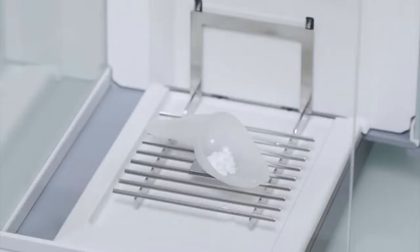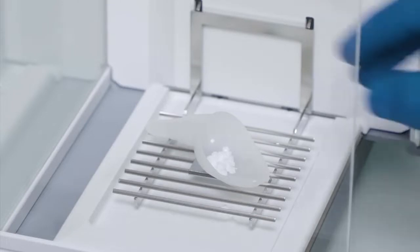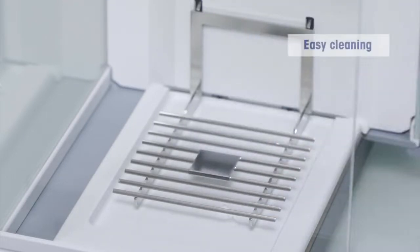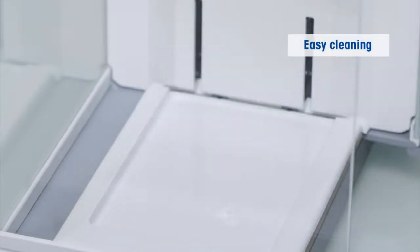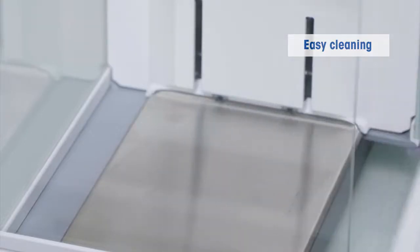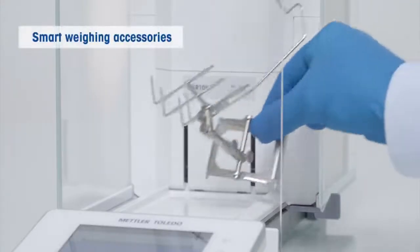The smart grid weighing pan further reduces influences of draft and makes sure that spills fall through the grid and are not added to the result. So let's start weighing.